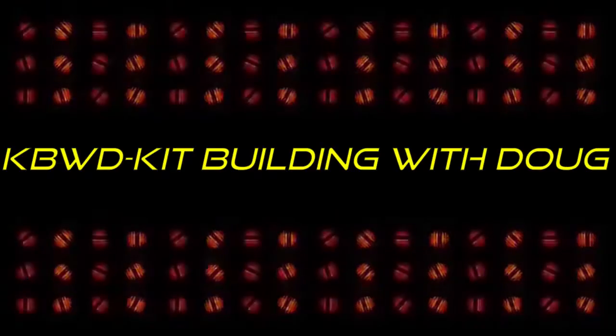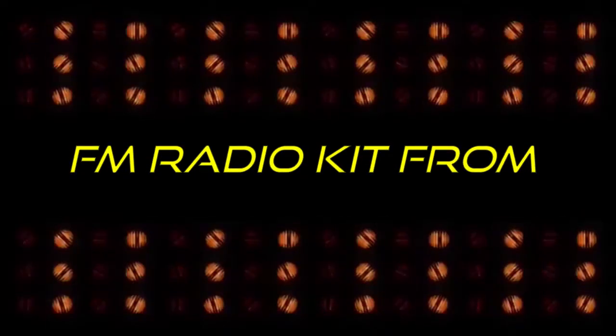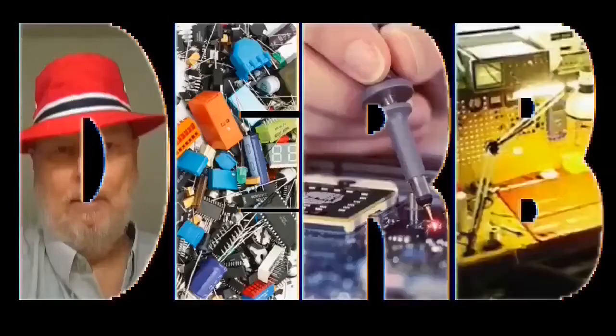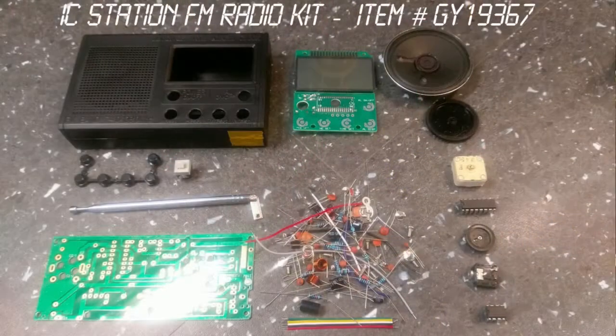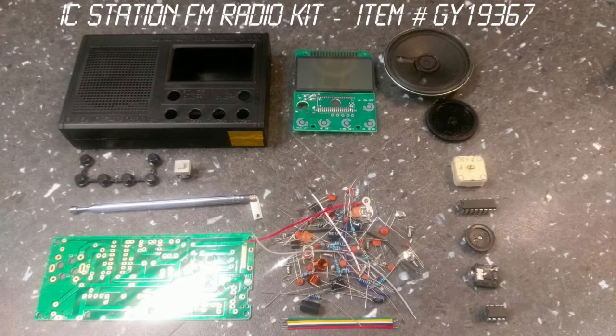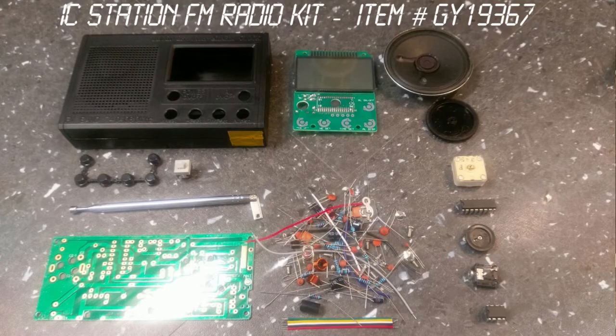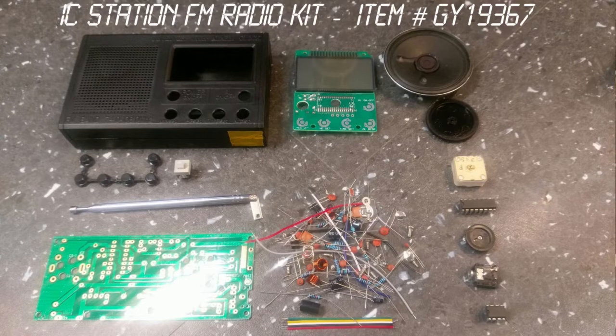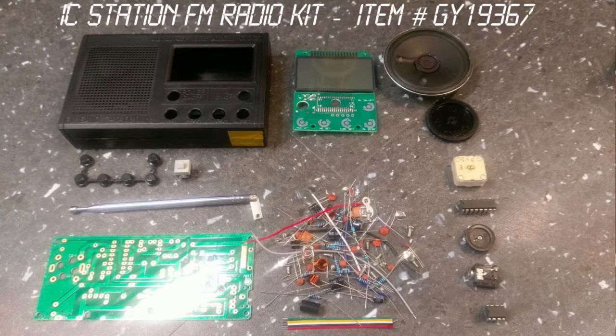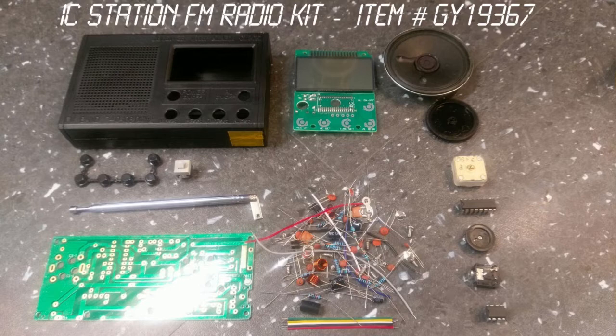Coming up on the next episode. Good day YouTube! Here with you today to build a kit. This would be an episode of Kit Building with Doug. On the bench before you see the IC station FM radio kit, item number GY19367. And that is what we are going to start building today. This is going to be part one.